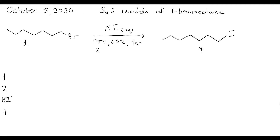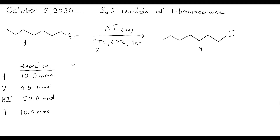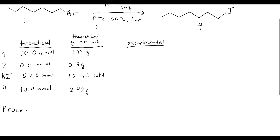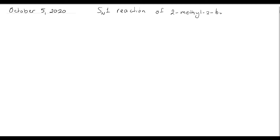Now we construct the table of all our contents. The first column consists of theoretical quantities — the millimole amounts of each compound we'll be working with. Make sure you use the correct number of significant figures. In the next column, we convert the millimole amounts into actual measurable quantities: 1.93 grams of bromooctane, roughly 0.18 grams of the phase transfer catalyst, 15.7 mL of the saturated potassium iodide solution, and this should give us 2.40 grams of product. The next column records actual quantities used in the lab. Below the table, we write out the procedure. On another page, we would do the same for our SN1 reaction. Now that we have all our reactions planned out in our notebook, let's head to lab and start our synthesis.